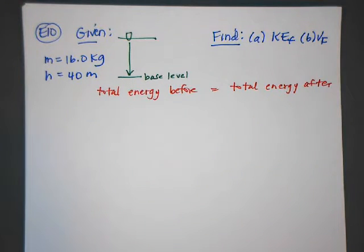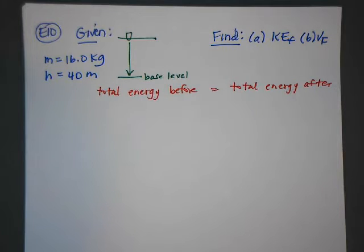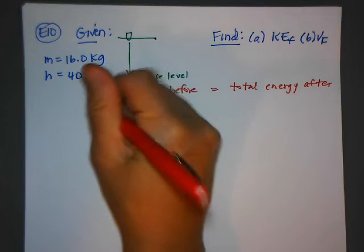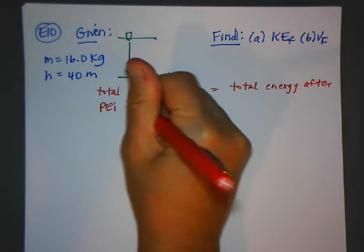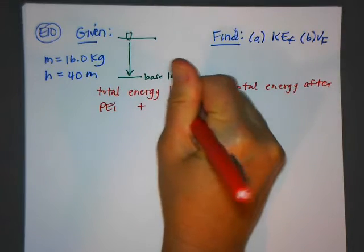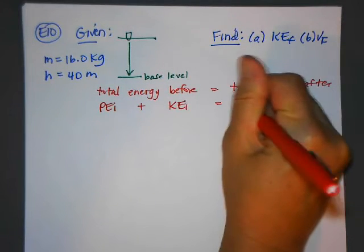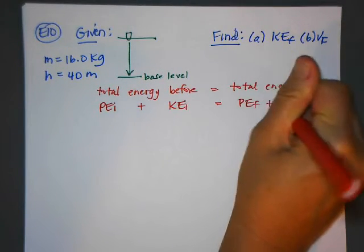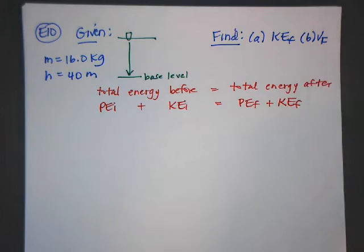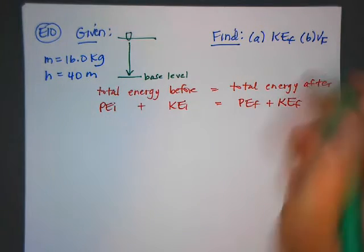Remember that the total energy before is the sum of the potential and kinetic. So I know that PEi plus KEi is equal to PEf plus KEf. So for the first part, this is what we want to find.